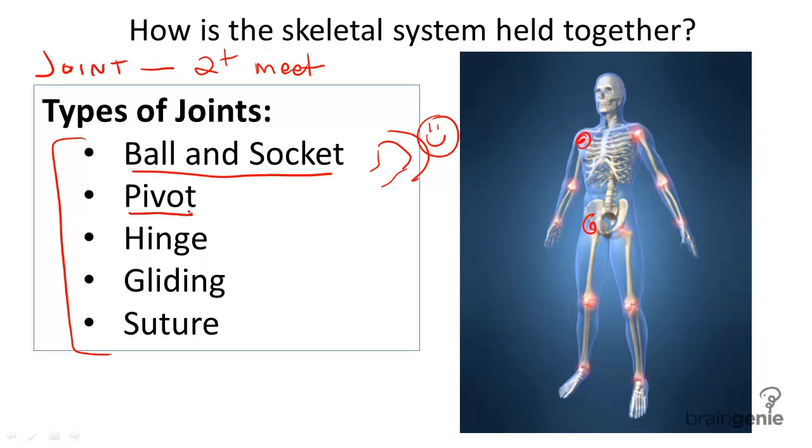The pivot joint. An example of the pivot joint is the elbow. In the elbow, the primary movement is rotation, such as twisting the lower arm.